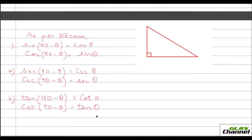Let's take this right triangle. We know the sum of all three angles in any triangle is 180 degrees. Since this is a right triangle, one angle is 90 degrees. So the other two angles together must sum to 90 degrees, because 90 degrees is already used by one angle, and the remaining two angles must sum to 90 degrees.